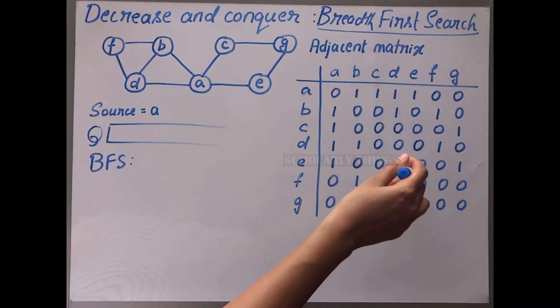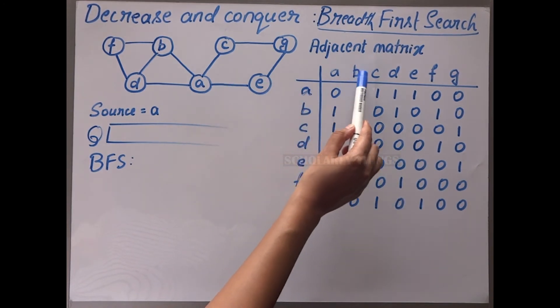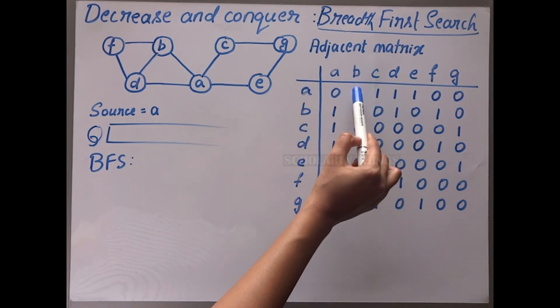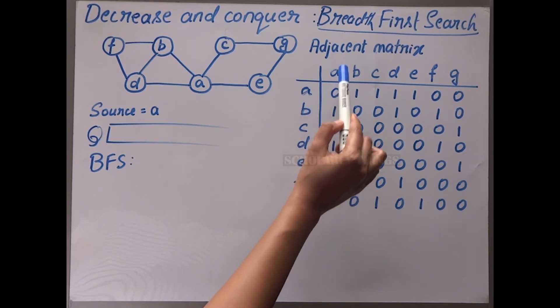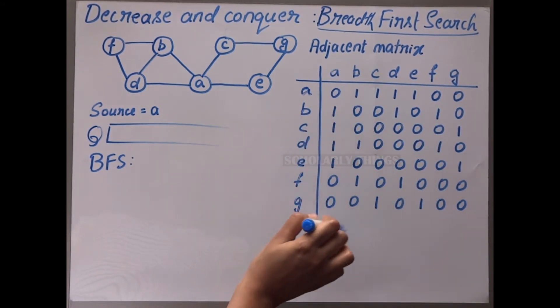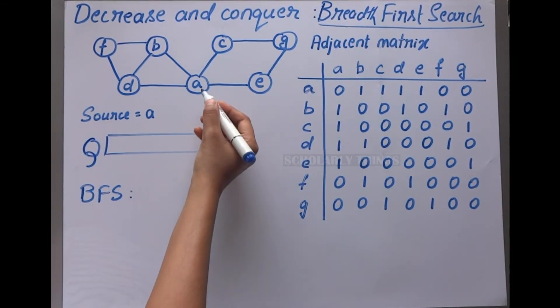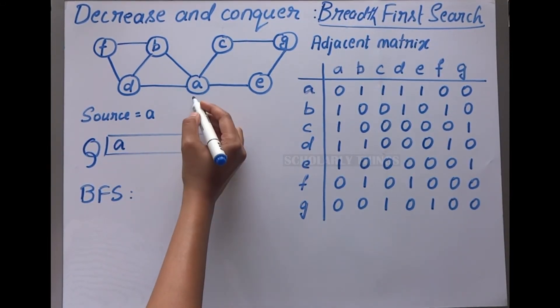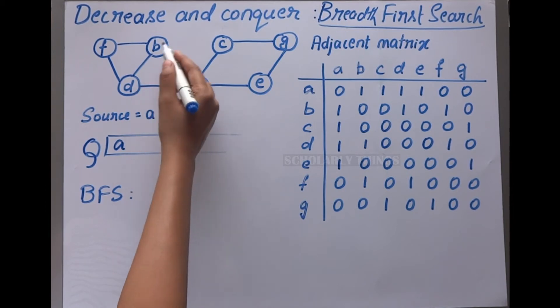Node a has b, c, d, e as adjacent nodes. Node b has a, d, f as adjacent nodes, and so on. First, let's visit a. After visiting a, explore all its adjacent nodes.